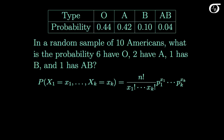Let's return to our example. In a random sample of 10 Americans, what is the probability 6 have blood type O, 2 have type A, 1 has type B, and 1 has type AB? We've got a random sample here, so knowing one person's blood type tells us nothing about the next person's blood type, so the independence assumption is reasonable. On any one individual trial we get one of these four blood types, and these probabilities are staying constant from trial to trial. So the multinomial distribution is reasonable here.